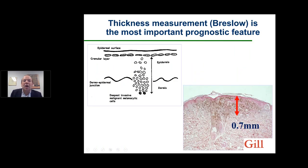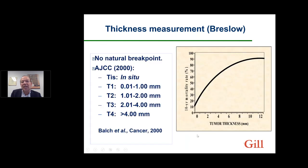How do we measure Breslow thickness? Here is an example of a melanoma. Under the microscope, using a microscopic scale, we measure the distance between the superficial part of the epidermis and the deepest part of the melanoma. Here it would be, for instance, a lesion of 0.7 millimeters. Sometimes it's more difficult — you may have a follicle involved by the melanoma that is not taken into account. There is a very strong, almost linear correlation between the mortality rate and tumor thickness.